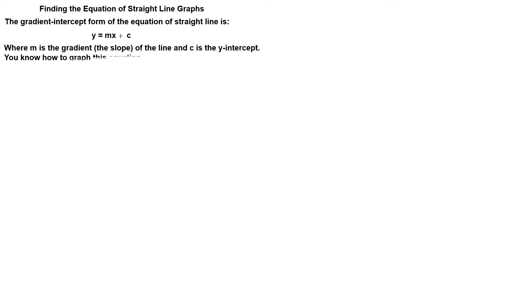Find the equation of straight-line graphs. The gradient-intercept form of the equation of a straight line is y = mx + c, where M is the gradient — the slope of the line — and C is the y-intercept. You know how to graph this equation, but the focus of this video is on the equation itself and how to find it from graphs. Let's see how it works.